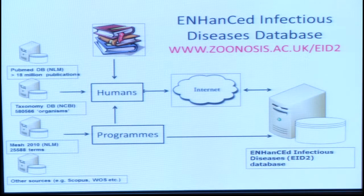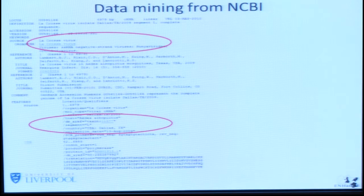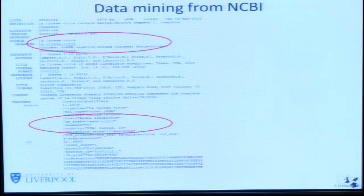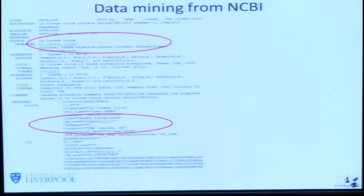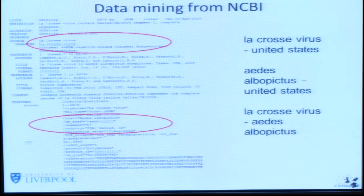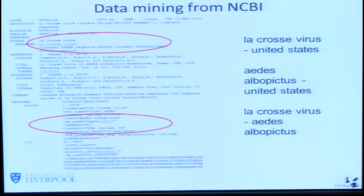The key thing that we have done in putting this database together is to exploit, in particular, the information that's uploaded with sequences. This is the metadata uploaded with a single gene sequence to GenBank. It says the organism is LaCrosse virus, and the host is Aedes albopictus, the Asian tiger mosquito, obtained in the USA, specifically Dallas. So this gives us three pieces of useful information: LaCrosse virus must be found in the United States, Aedes albopictus must be found in the United States, and LaCrosse virus infects Aedes albopictus.